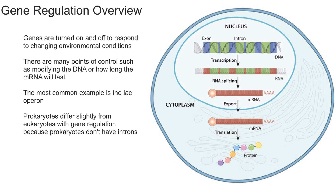The last thing I want to go over is the importance of gene regulation. I'm going to give an example of prokaryotic gene regulation. A commonly used example you'll probably hear about often is called the lac operon. There are some bacteria that can use lactose to live, but bacteria normally prefer to use glucose.